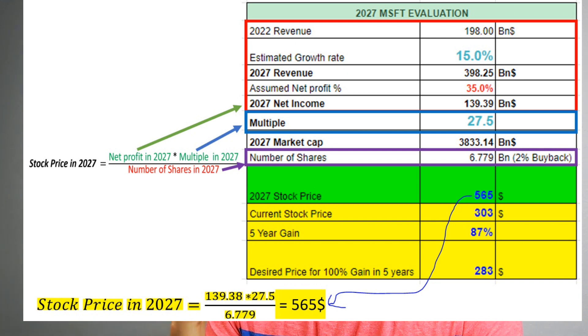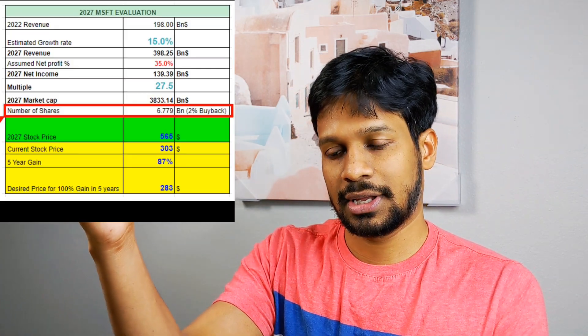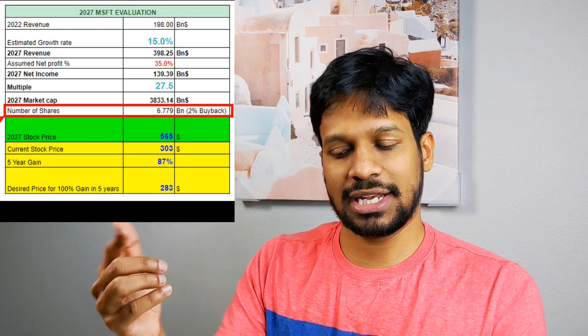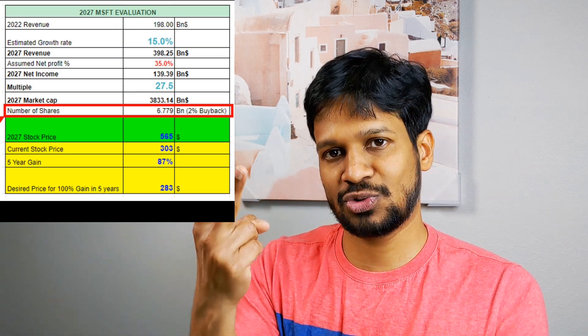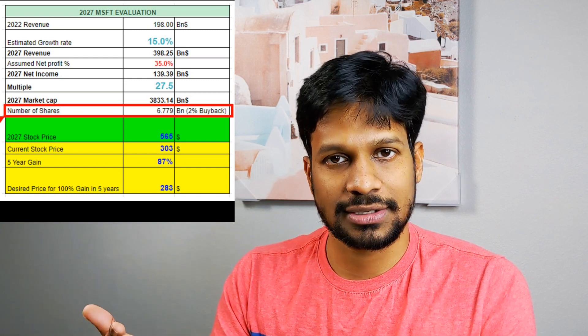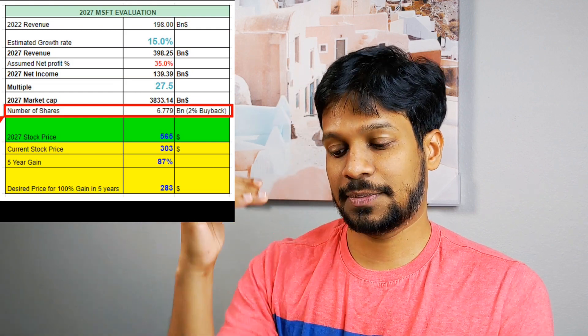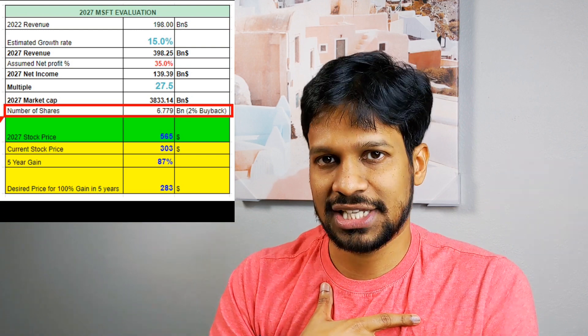I'm estimating a $565 stock price in 2027. My personal goal is a 2x return in 5 years, so for a 2x I would need to buy at $283. If you want a 50% gain, you'd be okay paying a little more. When I did this video, the stock was at $303. From $303 to $565 in 5 years is about an 87% gain — which I was not satisfied with, since I needed a 2x.